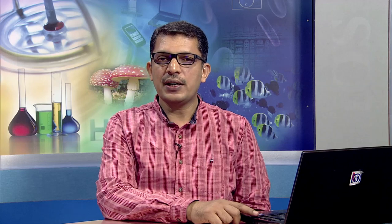To run educational institutions, both central and state governments provide immense financial support to the education system. Government institutions are funded and controlled by the government. There are government institutions, government aided institutions, and self-financing institutions. Government institutions are fully funded by the government, including salary of teachers and all expenditure needed for running the school.